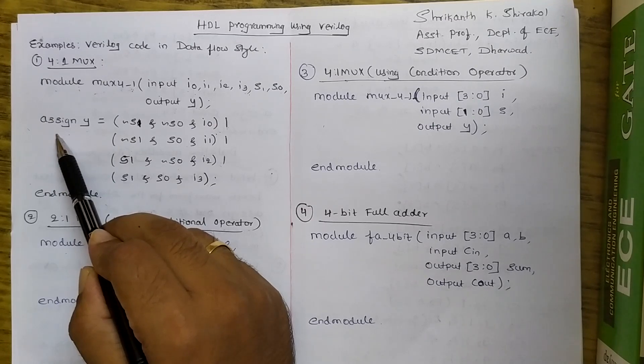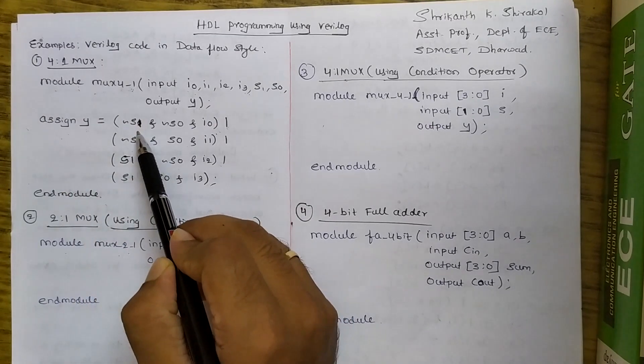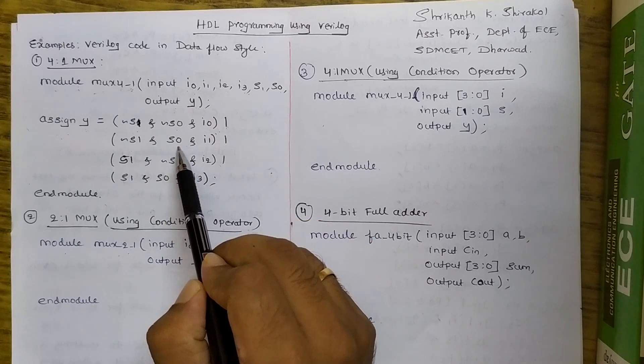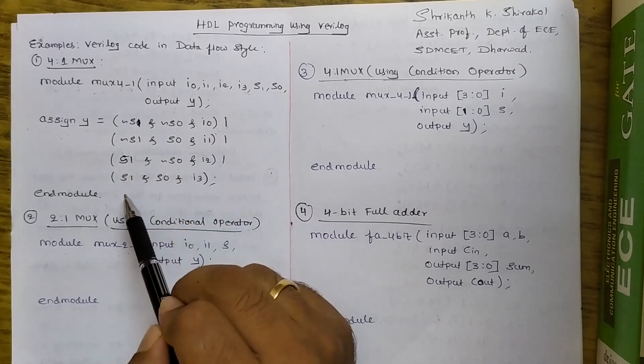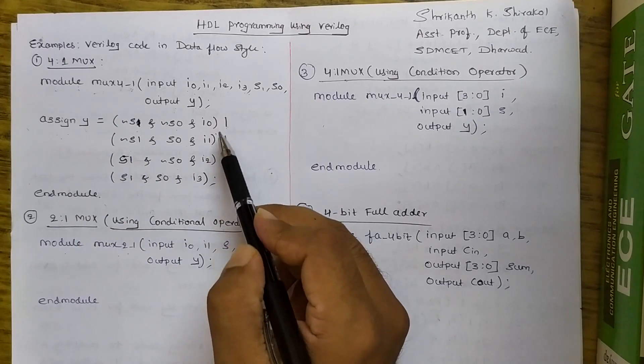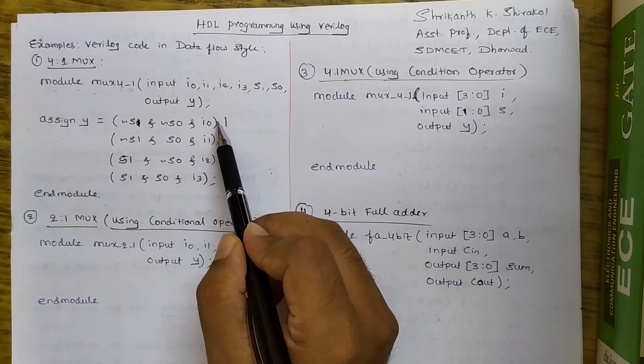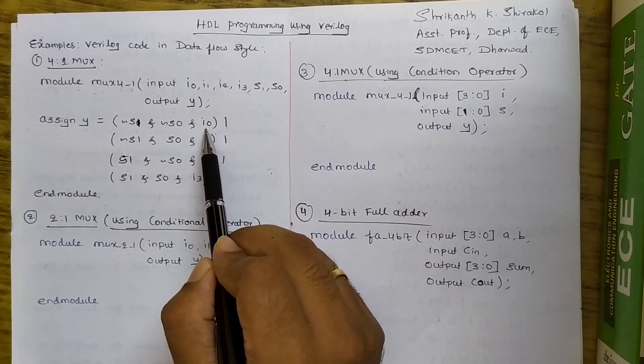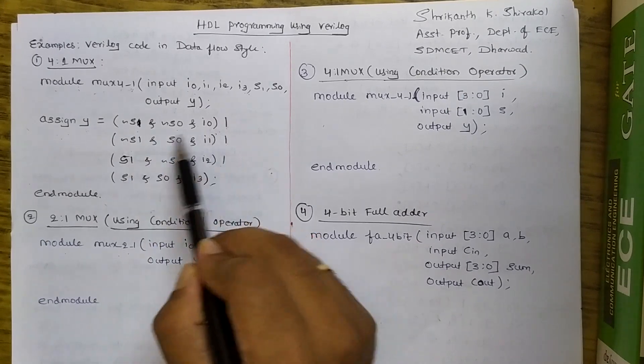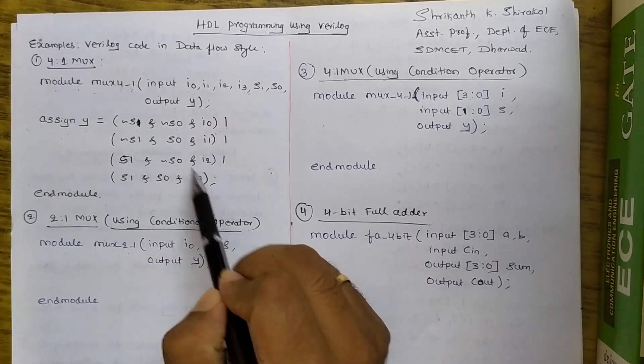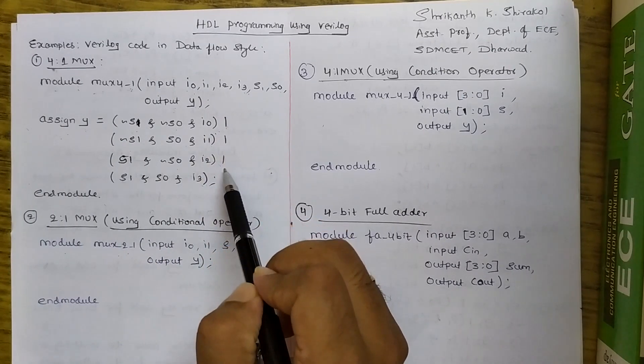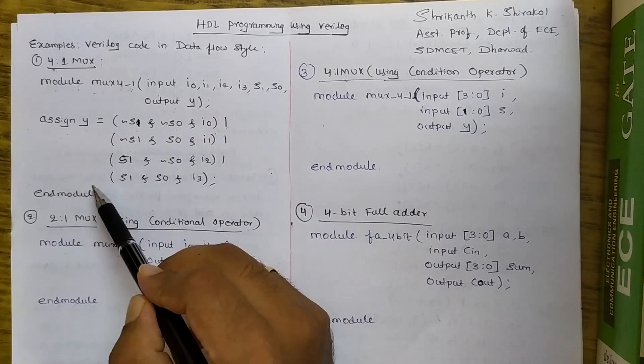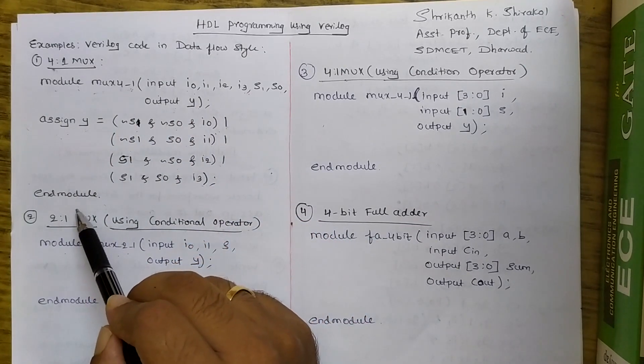Assign is a keyword used in all dataflow design style of modeling. Y is equal to S1 bar, S0 bar, I0 all ANDed operation. ORed with S1 bar, S0, I1. ORed with S1, S0 bar, I2. ORed with S1, S0, I3. So here whenever we put a parenthesis to cover certain expression, that thing will be having highest precedence for execution. So first all the things that are covered under the parenthesis will be executed, computed, followed by OR gate. And once the value is computed, it will be assigned to the Y. And all the Verilog code ends with end module keyword.